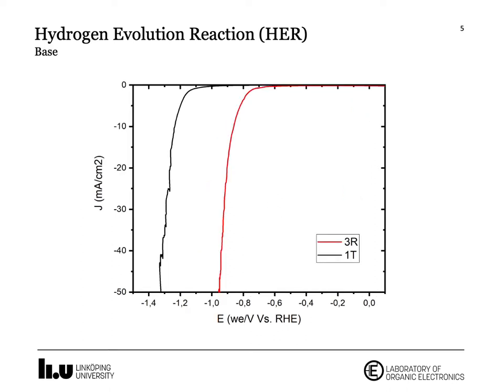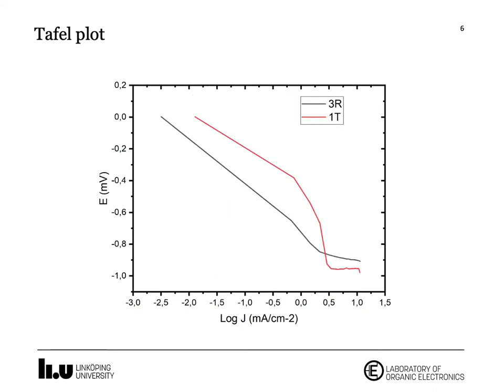The same more or less goes with the base. Then we have a Tafel plot that shows the same slope for the 3R and 1T, meaning that the formation reaction is governed using the same mechanism for both.